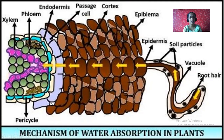Transportation is continuous. This is the pericycle present next to the endodermis. Ectodermis or epidermis is the outer layer of cells. Endodermis is the inner layer of cells. After endodermis there is pericycle, then phloem, then cambium, and then xylem exactly at the center, and pith.